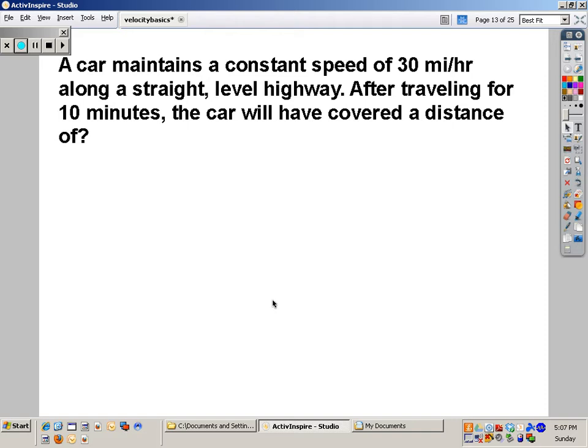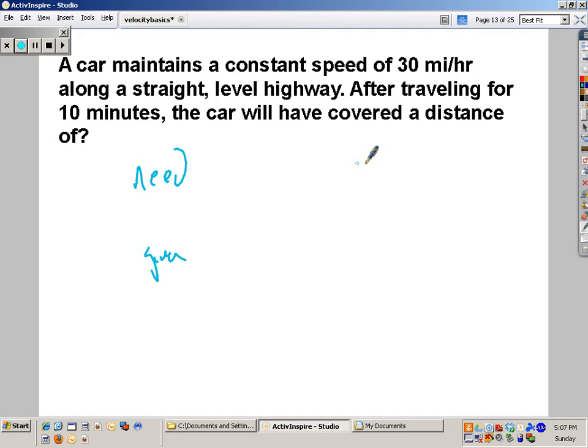A car maintains. Last one. Do this first. Do your setup. What do you need? What are you given? What's your formula? A car maintains a constant speed of 30 miles per hour along a straight level highway. After traveling 10 minutes,